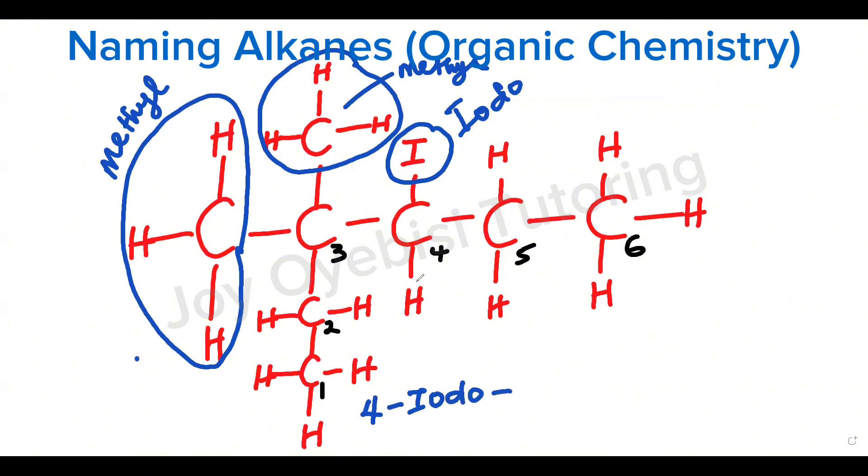Then move on to three comma three. Why do we do this? Because there is two methyl groups attached to the same carbon three. So you cannot just say three. If you say three, you're only representing one of the methyl groups. So we're going to repeat the number to show that there are two methyl groups attached to that carbon three.